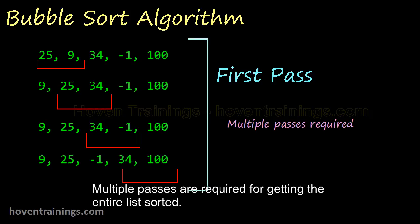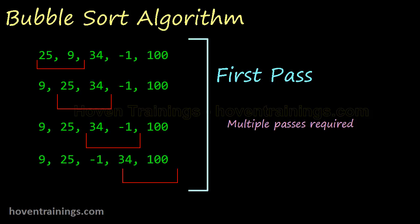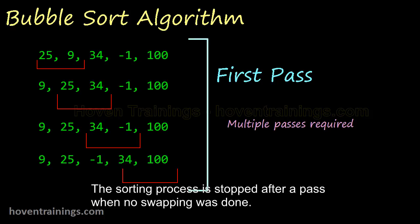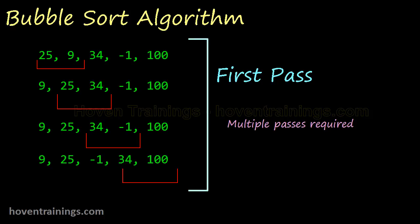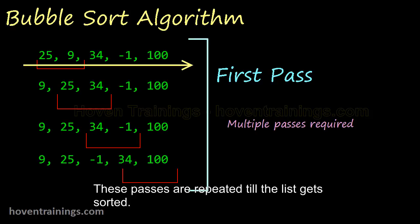Multiple passes are required for getting the entire list sorted. The sorting process is stopped after a pass when no swapping was done. These passes are repeated till the list gets sorted.